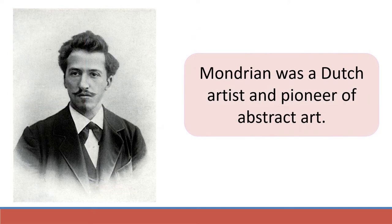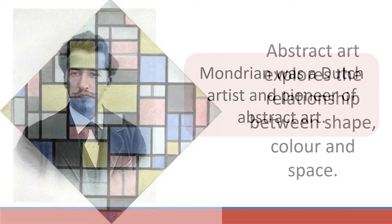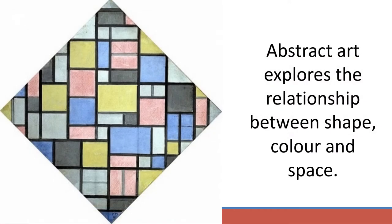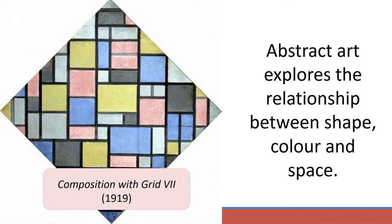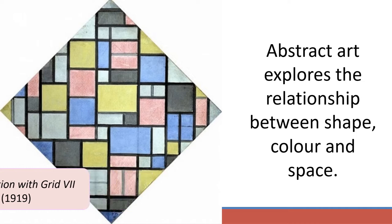Mondrian was a Dutch artist and pioneer of abstract art. Abstract art does not resemble a realistic object or place, but allows the artist to explore the relationship between shape, colour and space.